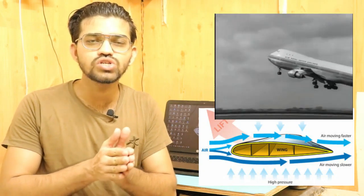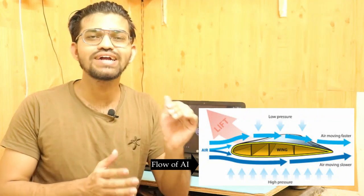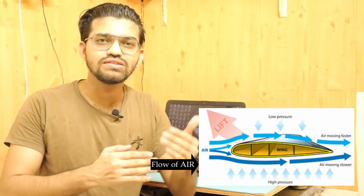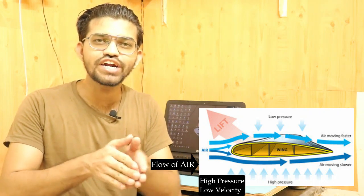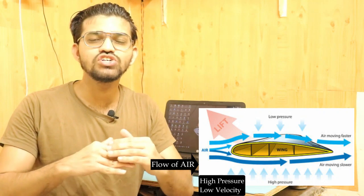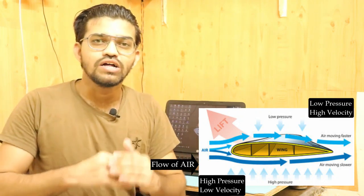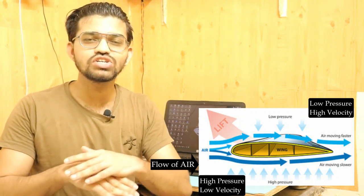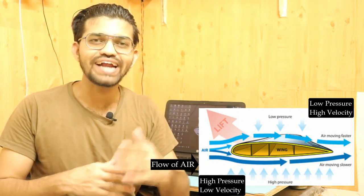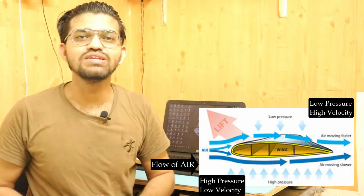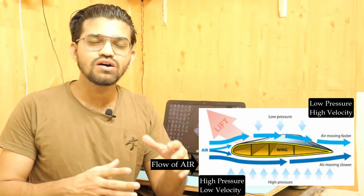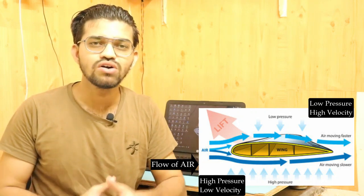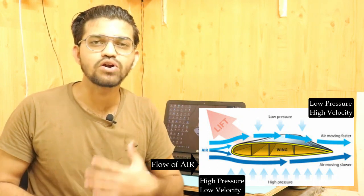When an airplane takes off, if we look at the airfoil cross-sectional arrangement, the airflow below the airfoil is slower, generating higher pressure below the wings. Above the wings, pressure is lower, meaning the velocity of air above the wing is greater. This difference — less velocity and more pressure below, more velocity and less pressure above — causes the wing to generate lift. This is the basic working principle of how an airplane takes off, and it is nothing but Bernoulli's principle.